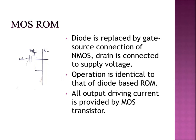To overcome this disadvantage, we move to MOS ROM. In MOS ROM, the diode is replaced by the gate-source connection of an NMOS transistor. The gate is connected to the wordline, the source is connected to the bitline, and the drain is connected to the supply voltage VDD. This is the basic structure and the main advantage of MOS ROM.